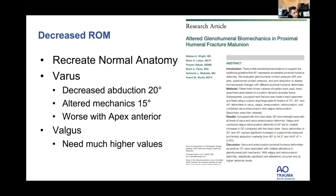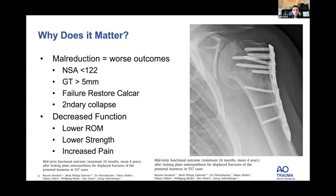A biomechanical study from Baltimore looked at which type of deformity was least tolerated. Varus seems least tolerated, but interestingly the worst combined function occurred when varus was combined with apex anterior deformity — a very common pattern. By about 15 to 20 degrees in two planes, this increases joint forces and significantly changes cuff pull, leading to decreased range of motion and increased joint wear.